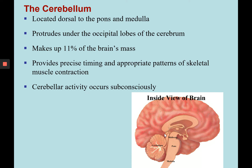Next, we're going to look at the cerebellum. Don't confuse cerebellum with cerebrum. The cerebellum is located dorsal to the pons medulla, or behind the brainstem, and it's under the occipital lobe of the cerebrum. It protrudes under the occipital lobe near the cerebrum and makes up 11% of the brain's mass. It's able to produce precise timing and appropriate patterns of skeletal muscle contraction, and cerebellum activity occurs subconsciously.